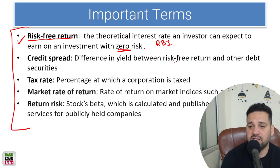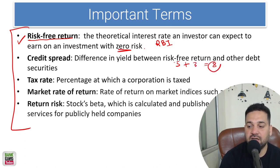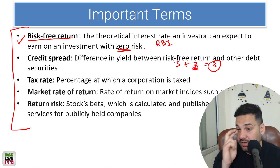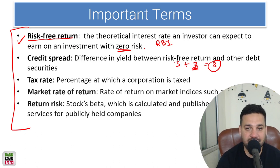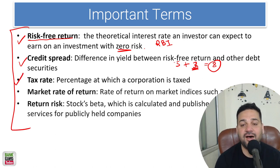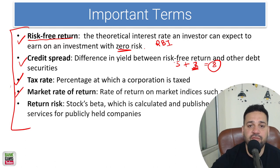Anything above the risk-free return is the credit spread. For example, if the risk-free return is 5% and a bank is charging 8% interest on credit, then 3% is the credit spread — the extra charge for taking on risk. Tax rate is the percentage at which corporations or individuals are taxed.